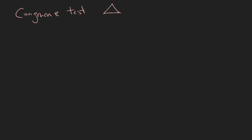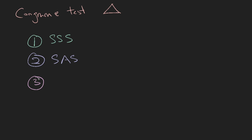You should memorize this summary of what you need to know. The four rules are: one, SSS; two, SAS; three, AAS; and four, RHS. Each letter means something: S stands for sides, A for angle, R for right angle, and H for hypotenuse.